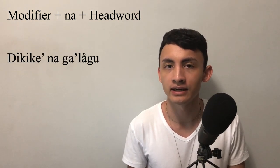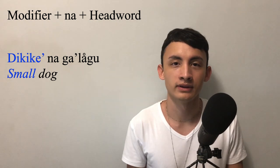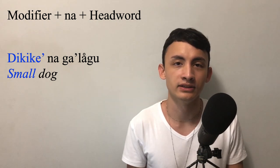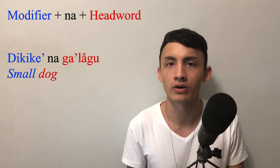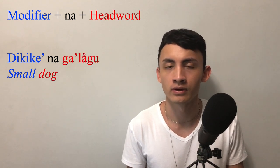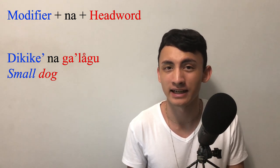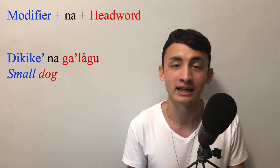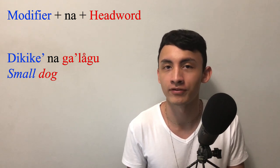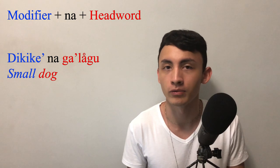Here is an example: dikiki na galagu, which means small dog. Dikiki is the modifier, as it is describing the headword, galagu. While NAH doesn't directly translate to anything, at least in this case, NAH is crucial to have, as it is what allows the modifier to be connected with the headword.